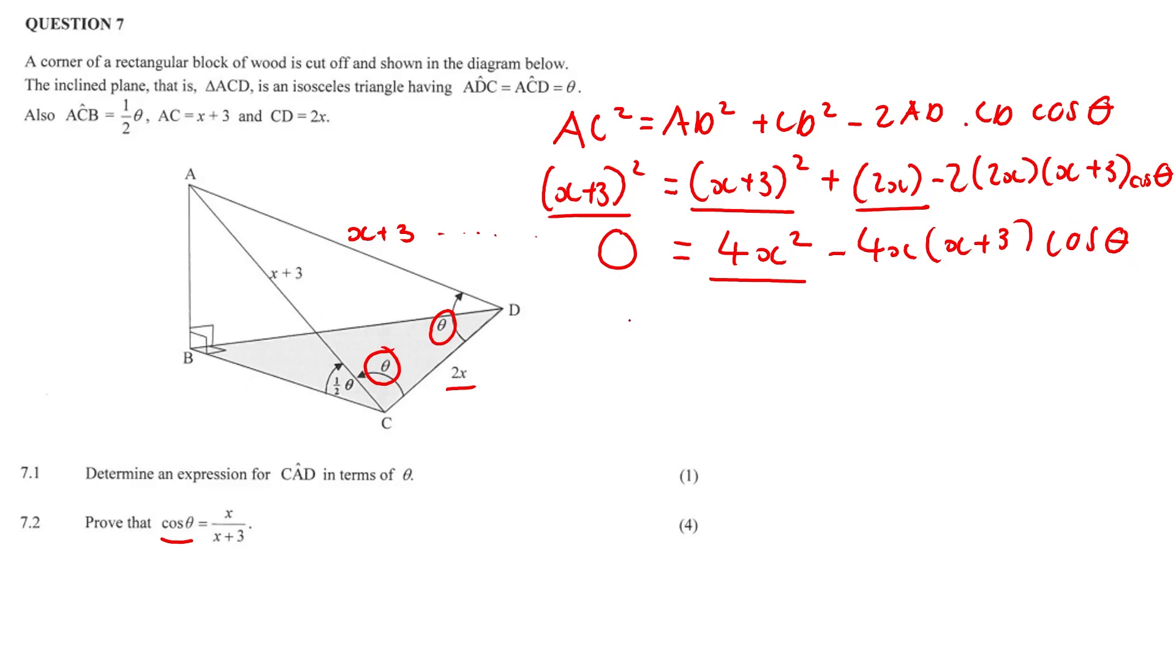So ultimately we want to isolate our cos theta. So let's just get it by itself immediately, and this 4x squared we take it over to the other side. So that's going to be a negative 4x squared, and we need to divide through by this negative 4x times x plus 3 in brackets.